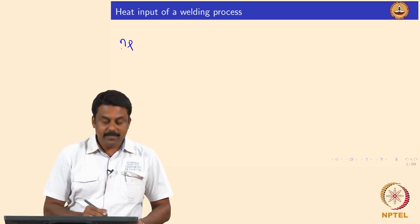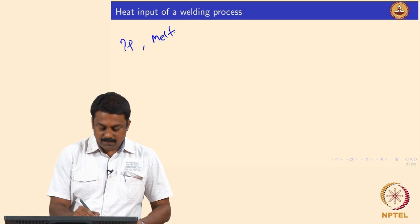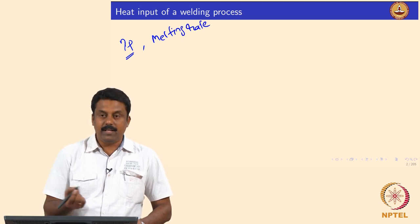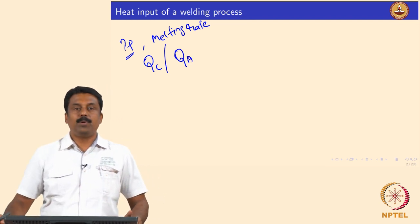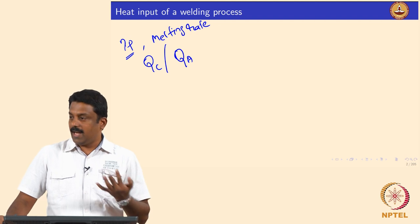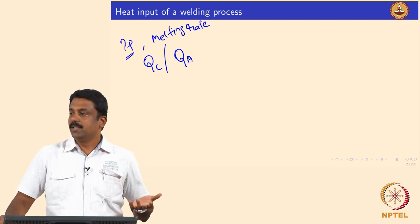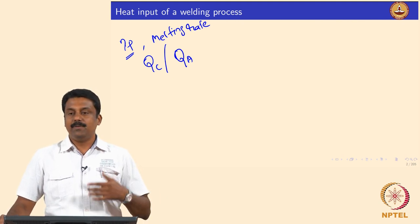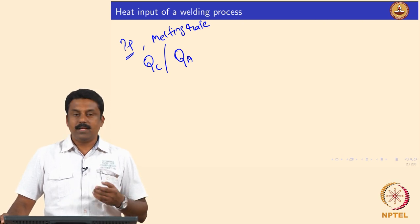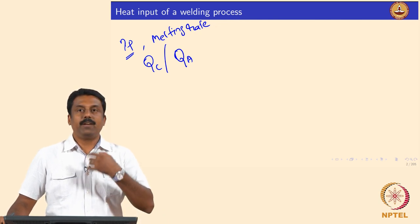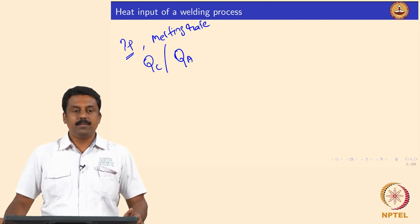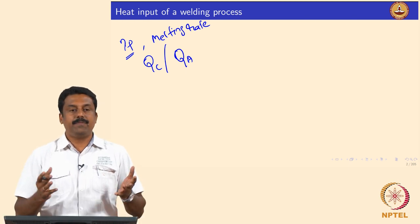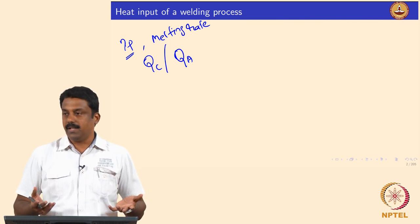Last class we covered two things: efficiency calculations (eta P) and the melting rate. We were deriving the heat in anode and cathode, QC and QA. Based on polarity we can assume the workpiece is anode or cathode. In GMAW process it is both QC plus QA, because whatever heat is generated in the cathode is also transferred back to the workpiece. That is why in GMAW process the efficiency is much higher.